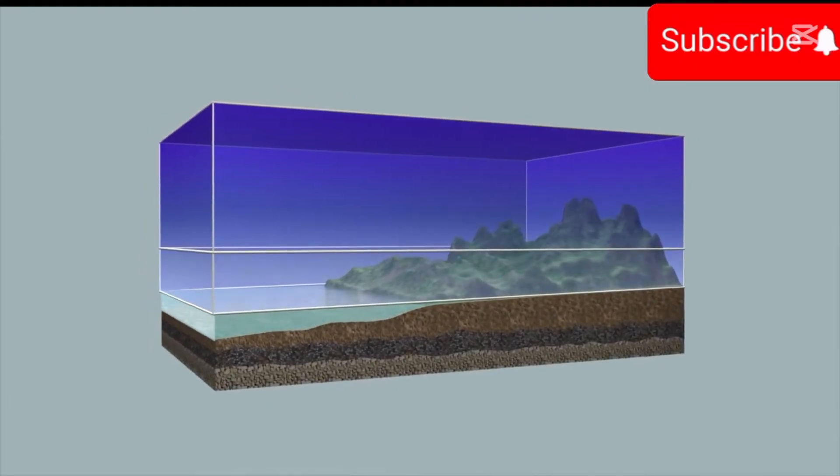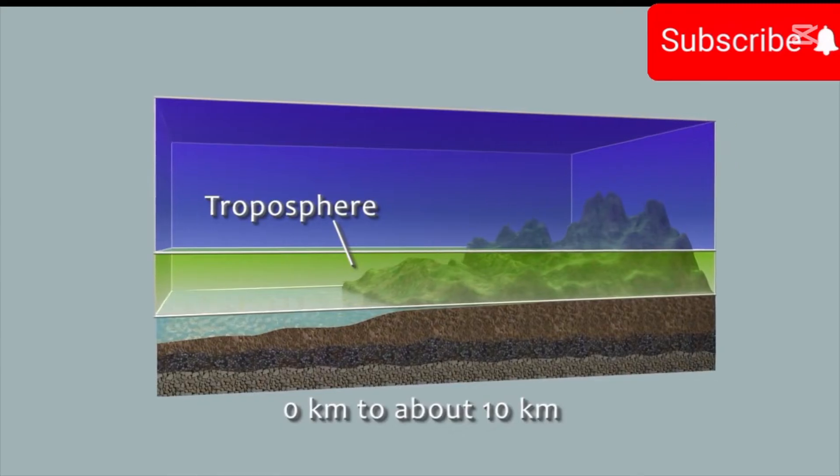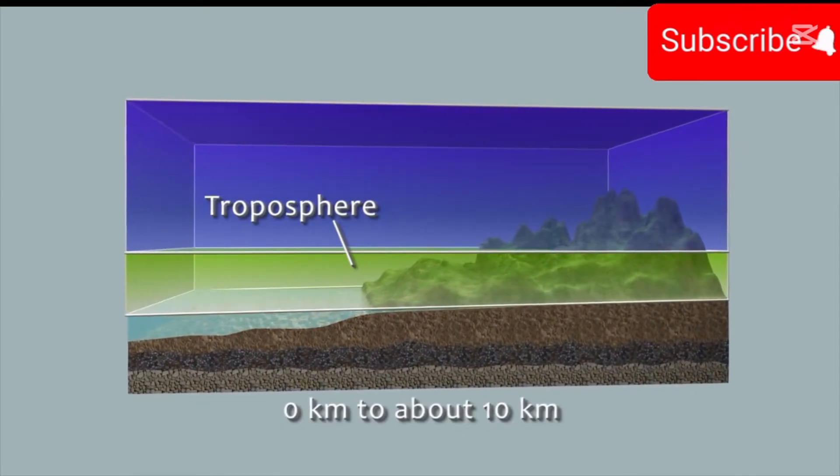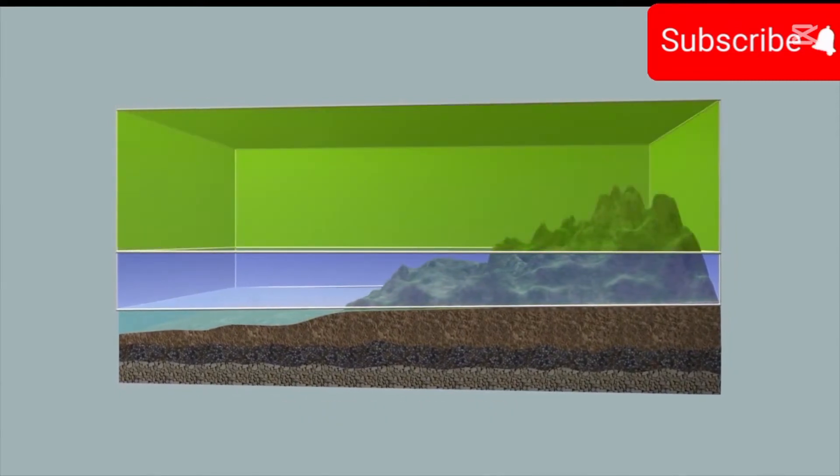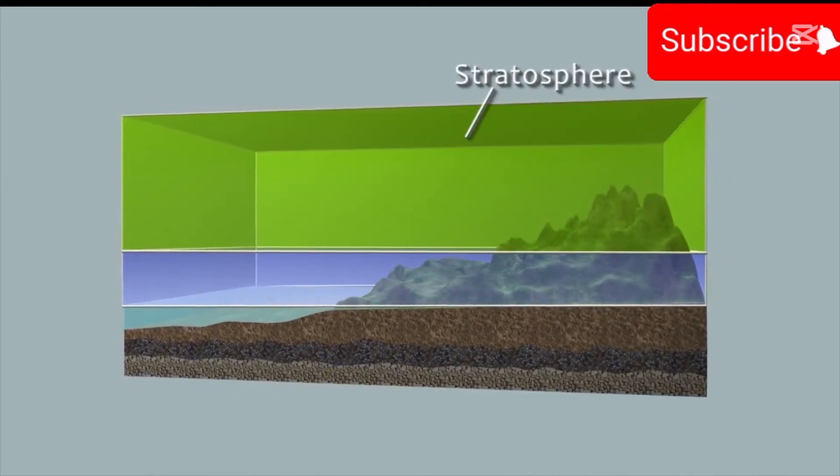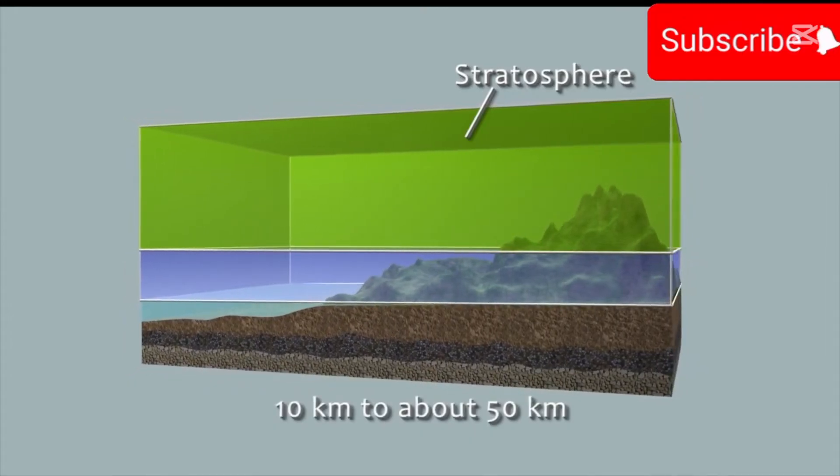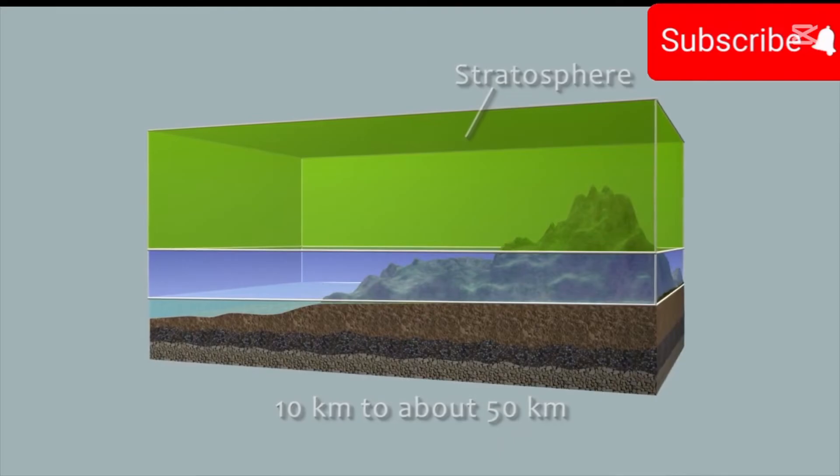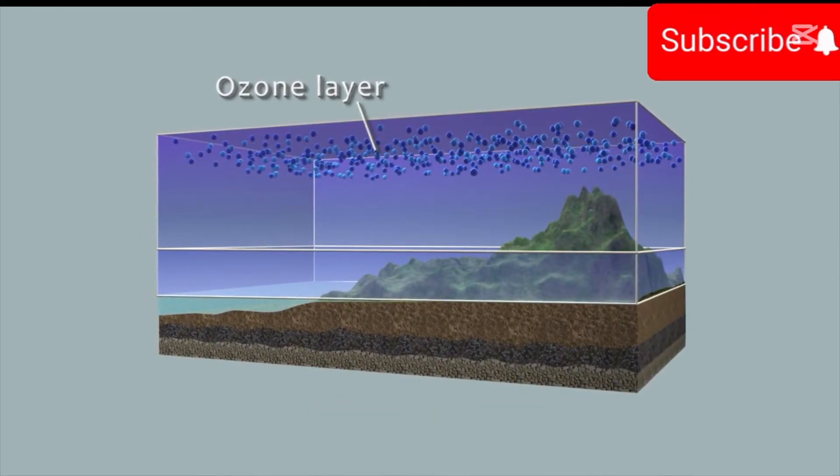The lowest region is called the troposphere, which extends from the Earth's surface up to about 10 kilometers in altitude. The next layer is called the stratosphere, that continues from 10 kilometers to about 50 kilometers. This is where most of the atmospheric ozone is concentrated.